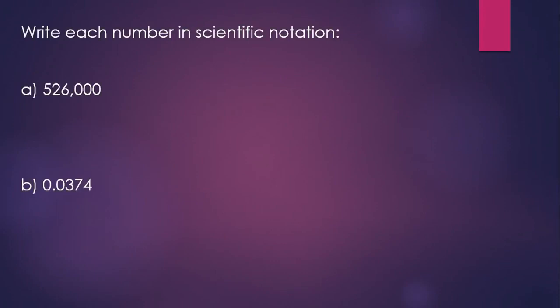Write each number in scientific notation. So to be in scientific notation, we need to have one non-zero digit in front of the decimal point, and then we're multiplying by a power of 10 so that we have a number equivalent to the one we started with. Remember, if you have a large number, the exponent on your power of 10 will be positive, and for a small number, a small decimal number, the exponent on your power of 10 will be negative.